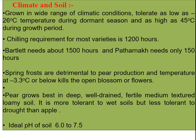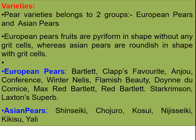Pear grows best in deep, well-drained, fertile, medium-textured loamy soil. It is more tolerant to wet soils but less tolerant to drought than apple. The ideal soil pH is 6 to 7.5.